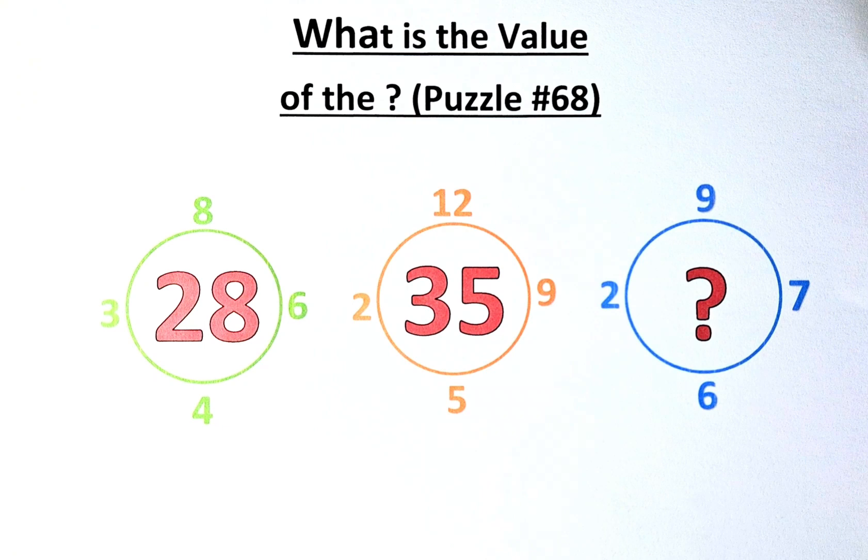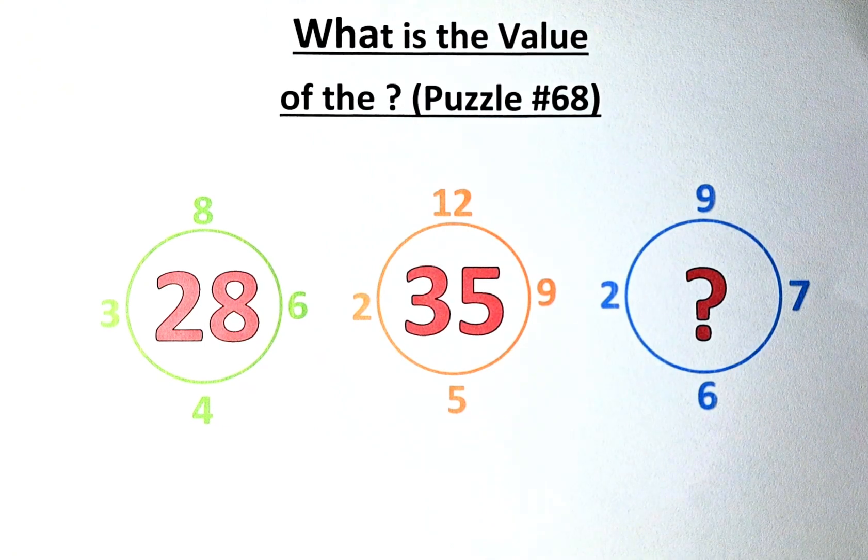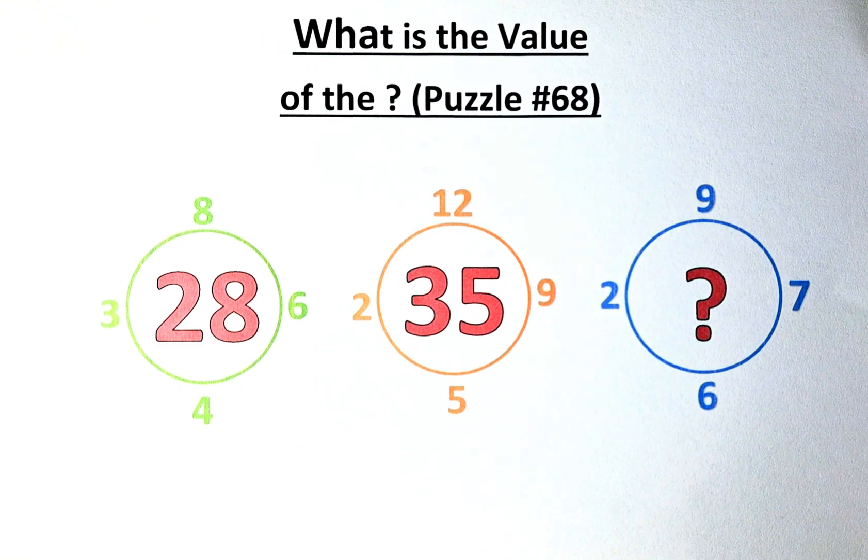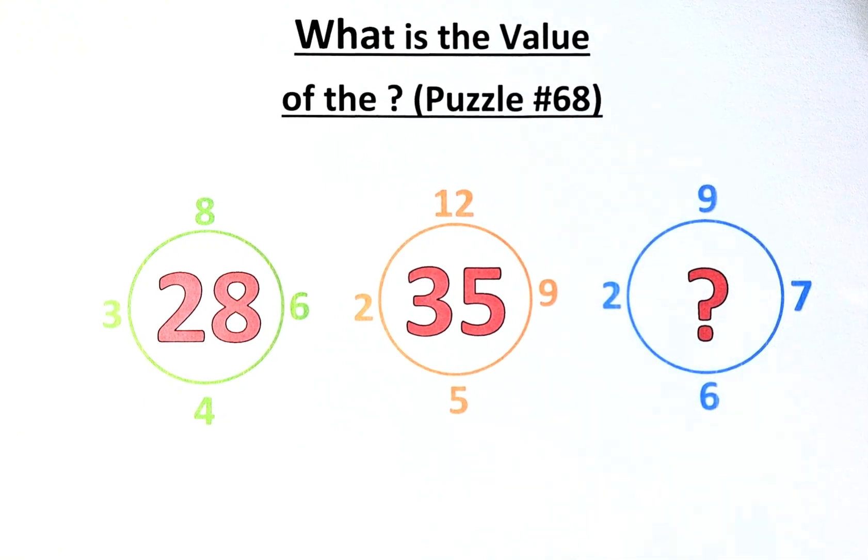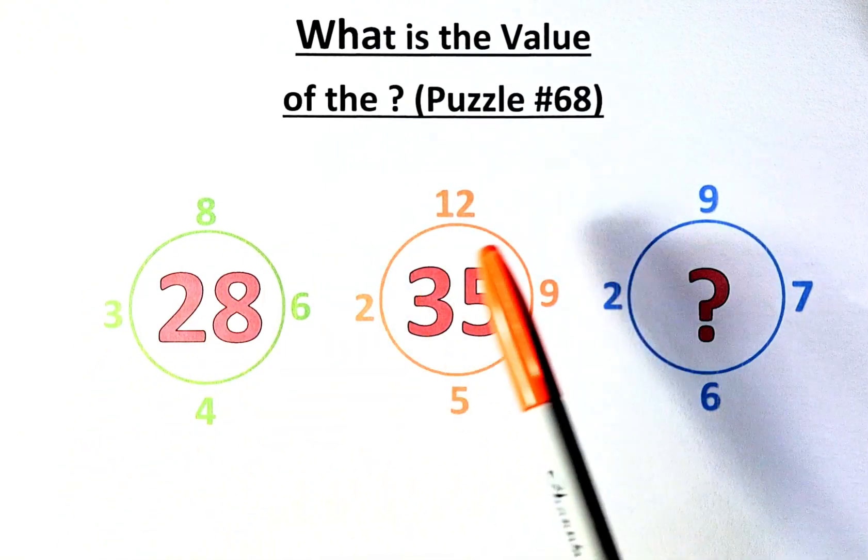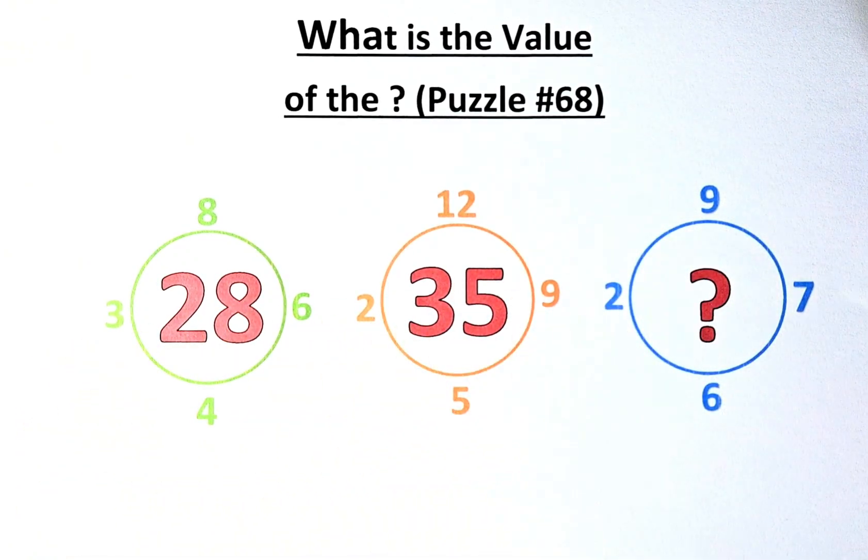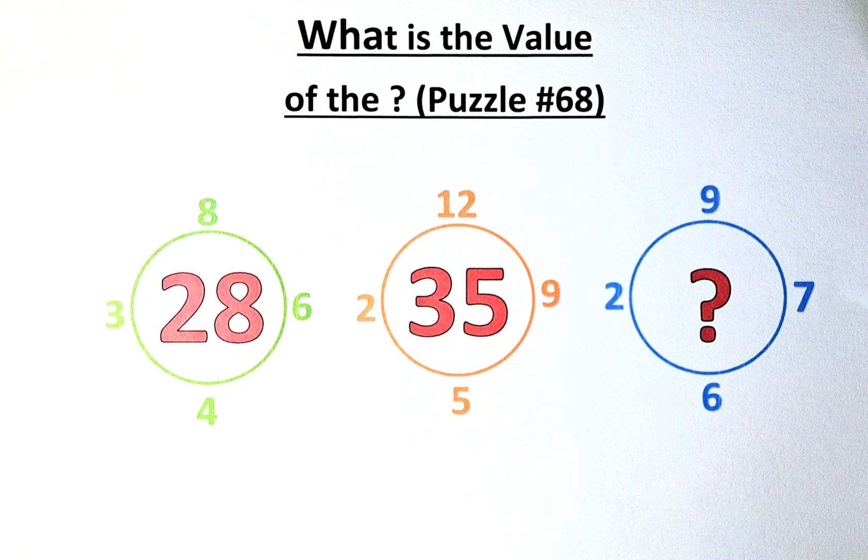If you can solve this puzzle, well done because this is not so easy but you need to think outside the box. So if you look at the puzzle, it looks as though it is manipulative because the biggest numbers are all at the top, 8, 12 and 9 and the smallest numbers on the left hand side, 3, 2 and 2. But in this case, it's not the case.